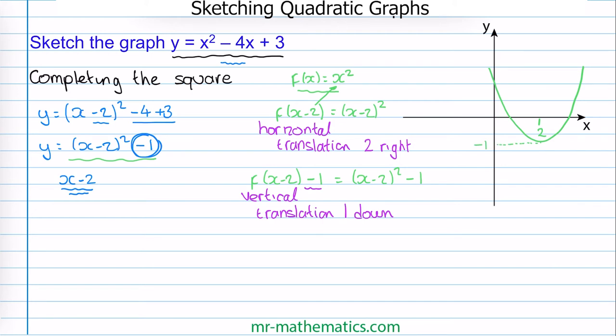So now we can identify the turning point. The turning point is at the minimum of the curve, and this is when we go from a negative gradient to a positive gradient. So our turning point has a coordinate of 2 and negative 1.